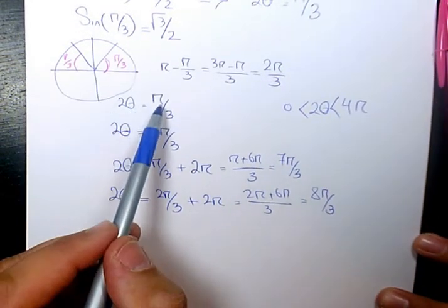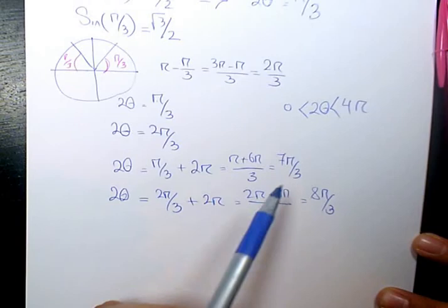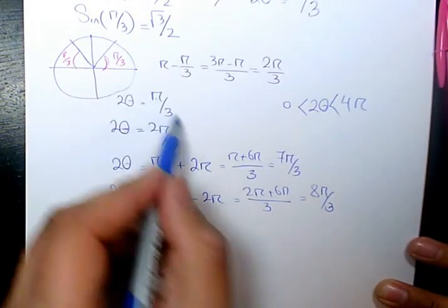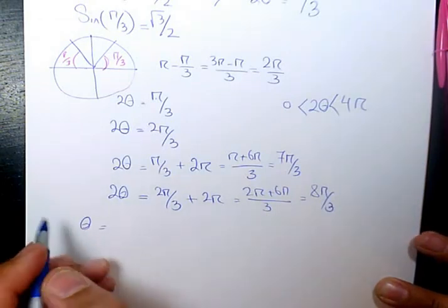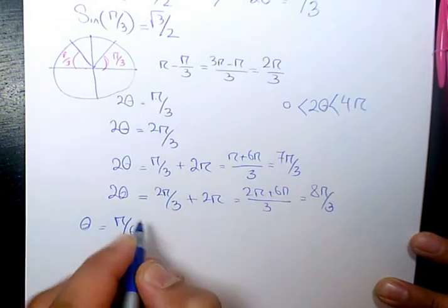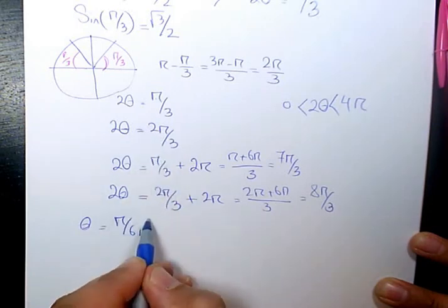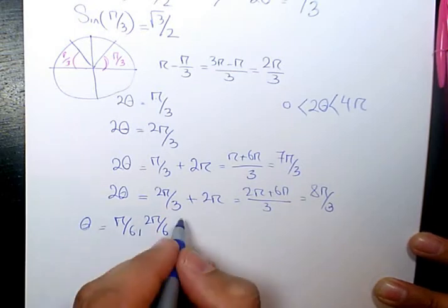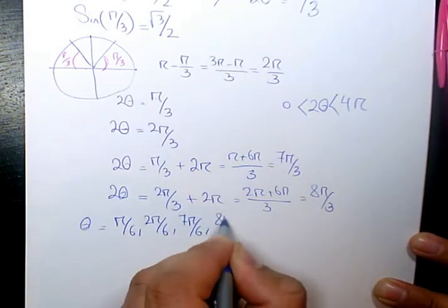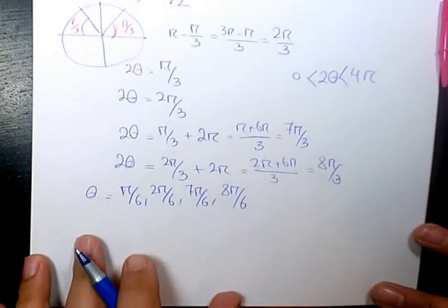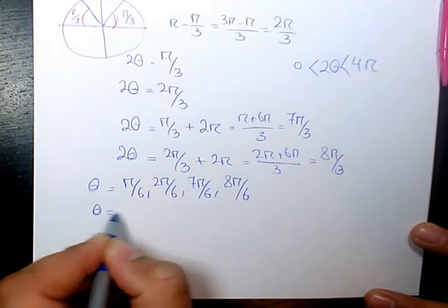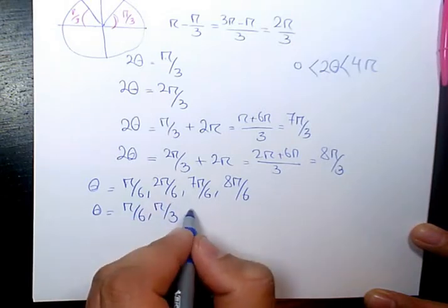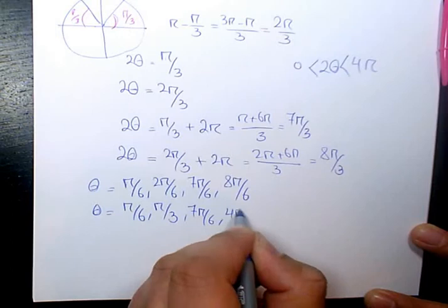So now 2 theta is pi over 3, 7 pi over 3, 8 pi over 3, and 2 pi over 3. If you want to find theta, we need to divide all these answers by 2. That will be pi over 6, 2 pi over 6, and then after that I'm going to come back and reduce it, 7 pi over 6, and 8 pi over 6. If you reduce it, that will make it pi over 6, pi over 3, 7 pi over 6, and 4 pi over 3.